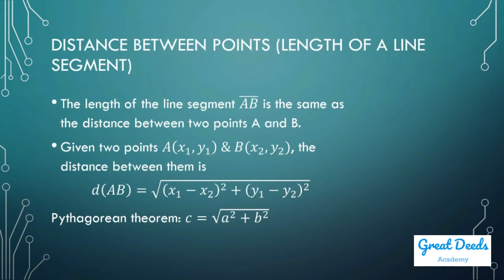Distance between points, or length of a line segment. The length of line segment AB is the same as the distance between two points A and B. Given two points with coordinates (x₁, y₁) and (x₂, y₂), the distance is the square root of (x₁ minus x₂) squared plus (y₁ minus y₂) squared.